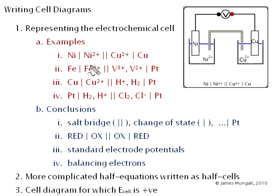So in this one here, we're going to look at some nickel copper, iron with vanadium, copper with hydrogen, hydrogen with chlorine examples, and then come to some conclusions on how we represent the salt bridge, change of state, use of platinum, order in which we put things, how this relates to standard electrode potentials, and what we do with regard to balancing atoms and electrons.